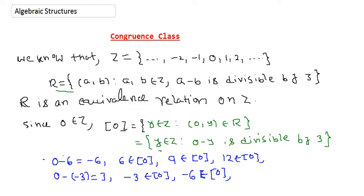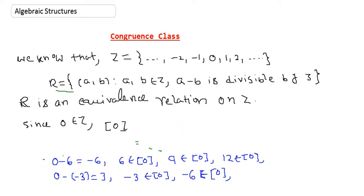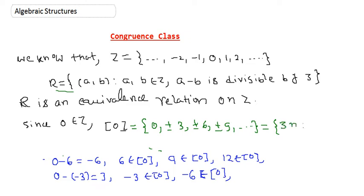Writing in more compact form, class of 0 contains: 0, plus-or-minus 3, plus-or-minus 6, plus-or-minus 9, and so on. This is the collection of all elements of the form 3n, where n is any integer. For n equals 0 we get 0, for n equals 1 we get 3, for n equals minus 1 we get minus 3, for n equals 2 we get 6, and so on.